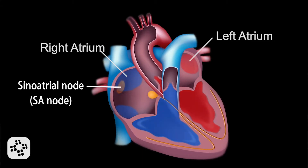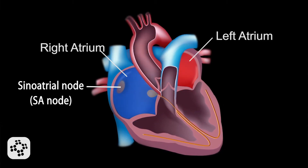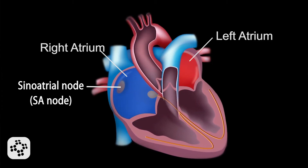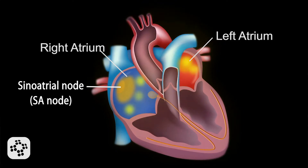This internal pacemaker, when the heart is working correctly, generates an electrical impulse that travels through the myocardium in a very organized and deliberate fashion. The SA node generates this electrical impulse at a rate of about 60 to 100 times per minute.